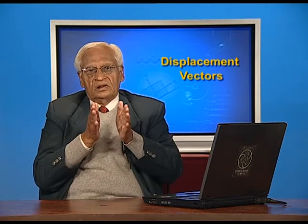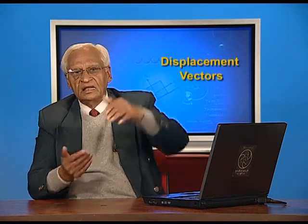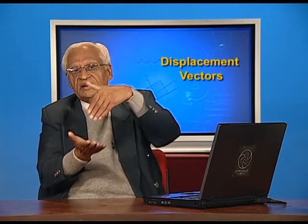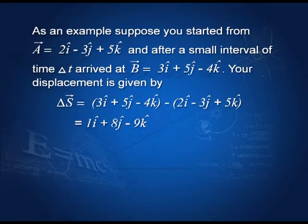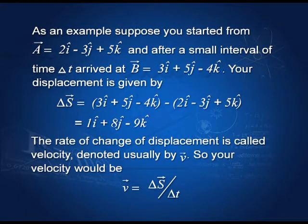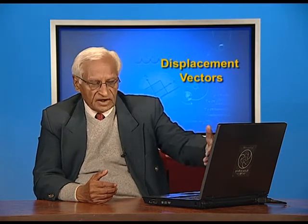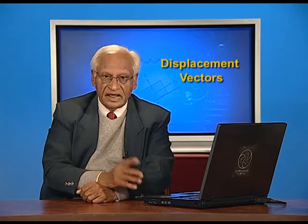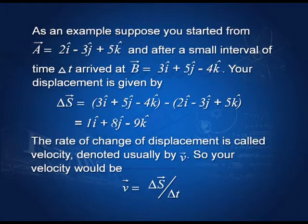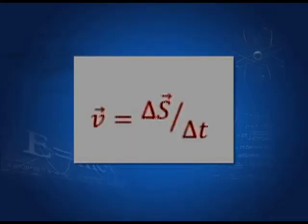If from position A to position B I have taken a small time delta t, then the rate of change would be ΔS divided by Δt. And this is equal to the velocity. So the velocity equals the displacement vector ΔS divided by Δt. Since ΔS is a vector, V is also a vector. Both sides you can check are vectors. If the equation is a vector equation, both sides must be vectors. So, vector V equals ΔS vector divided by Δt.